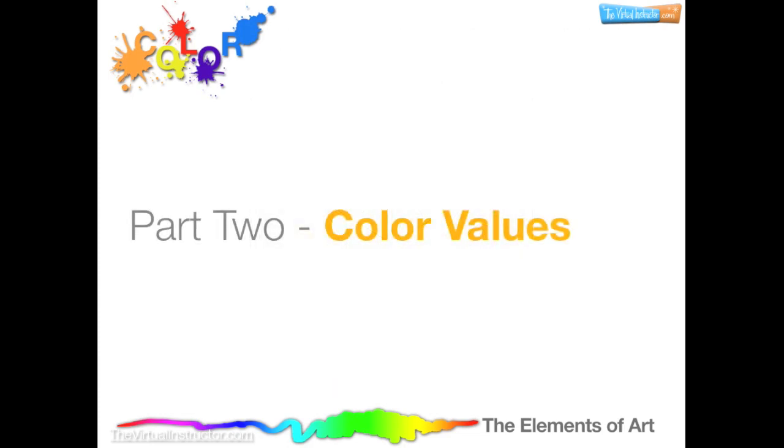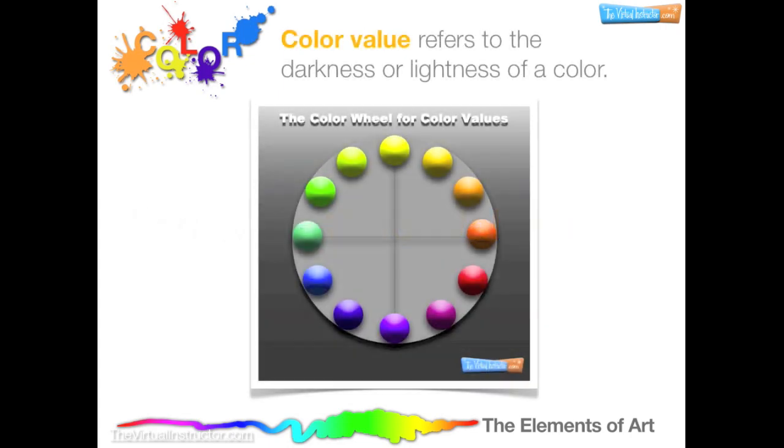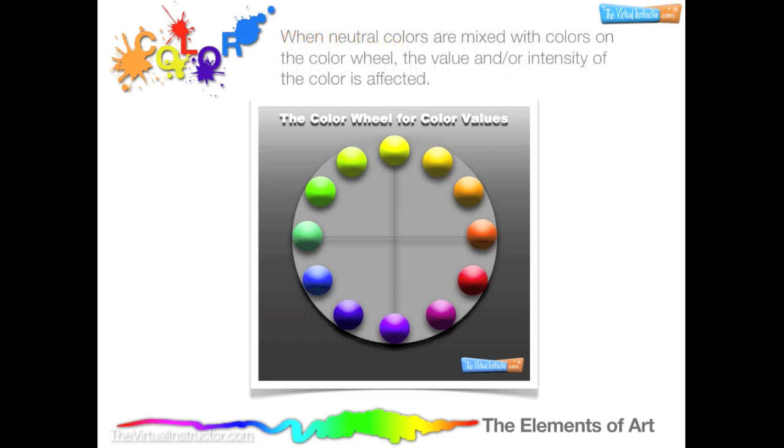Color theory part two: color values. Color value refers to the darkness or lightness of a color. In this color wheel, each color is represented with a full range of value. When neutral colors are mixed with colors on the color wheel, the value and/or intensity of the color is affected.